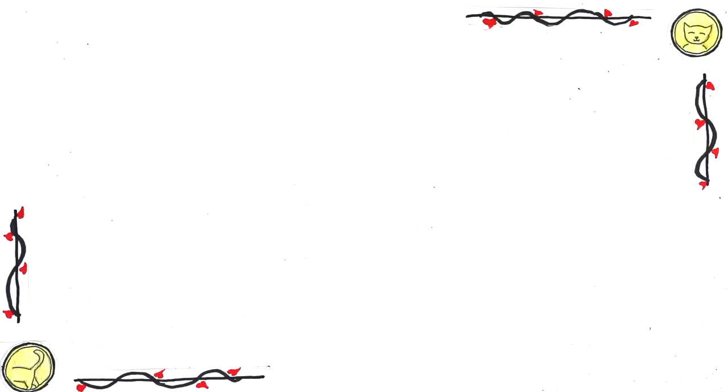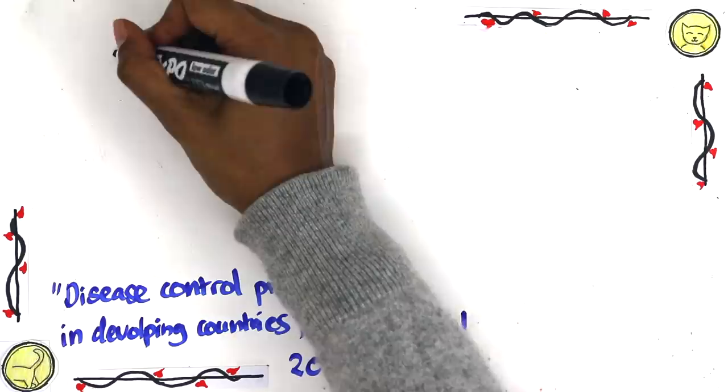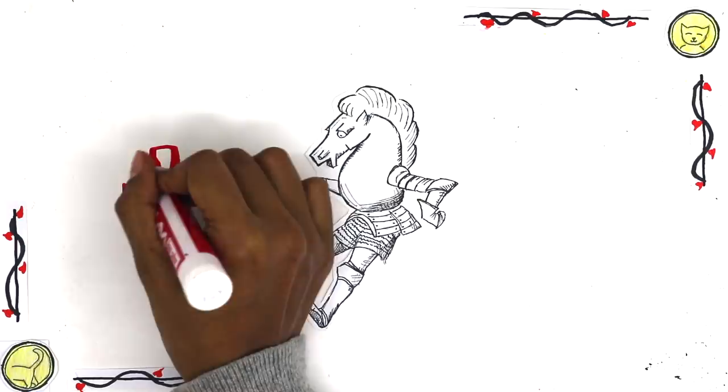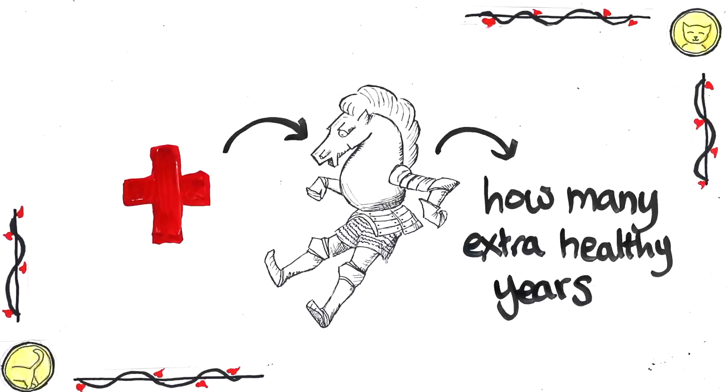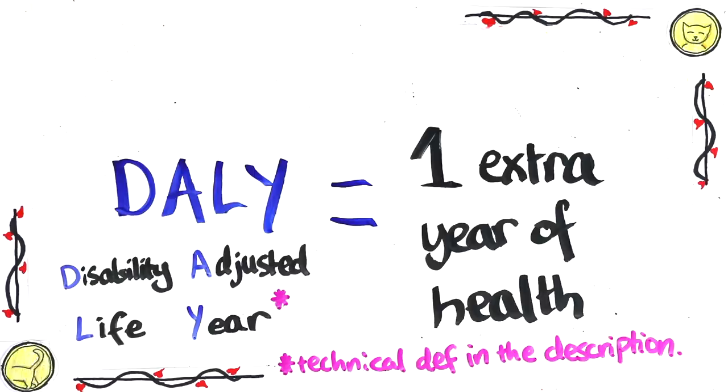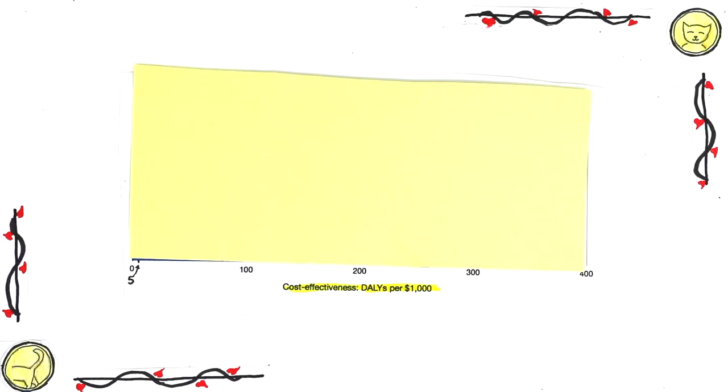To put this into perspective, here's some really mind-bending data. This study compared 108 health interventions in developing countries. To measure how successful a health intervention is, you want to look at how many extra healthy years of life it gives someone. One extra year of healthy life is what we'll call a DALY. This study looked at how many DALYs $1,000 spent on an intervention would buy.